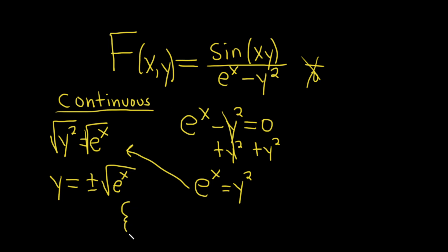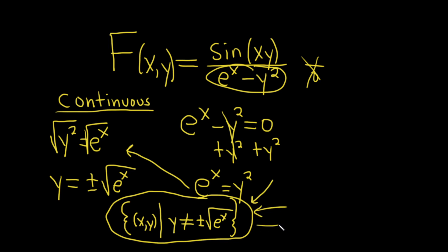So the set of all points where the function is continuous is the set of all ordered pairs x comma y such that y is not equal to plus or minus the square root of e to the x. It will be continuous everywhere except when the denominator is zero and that basically means this condition is true. So this is the set of all points where our function is continuous. That's it.